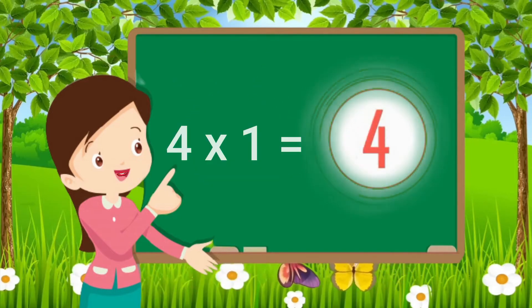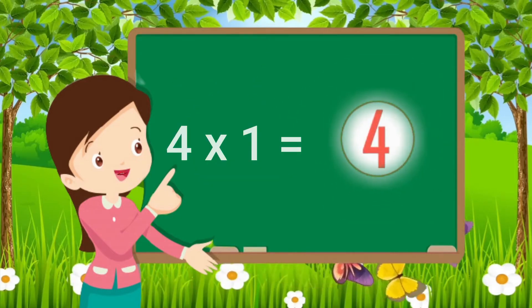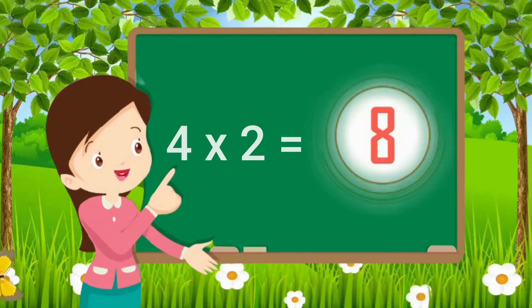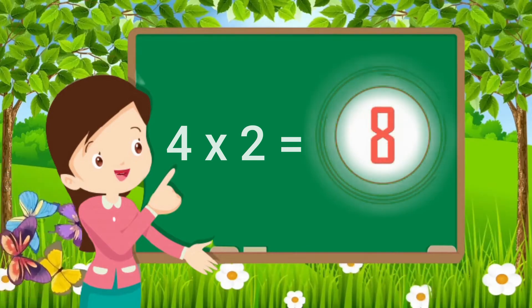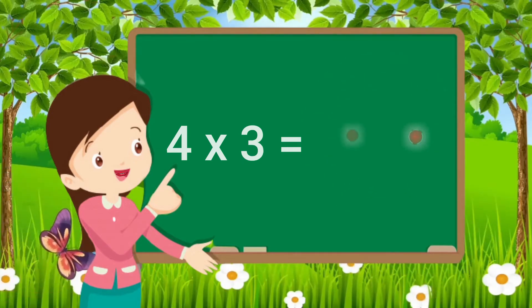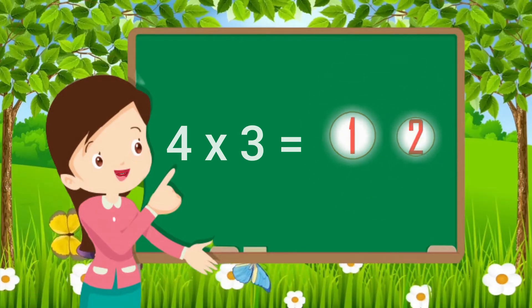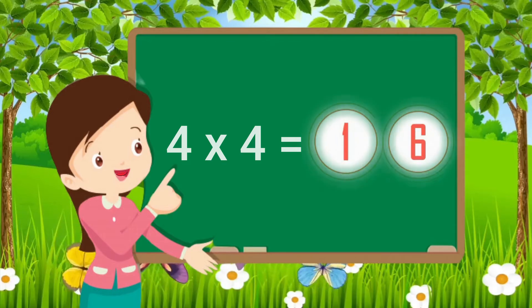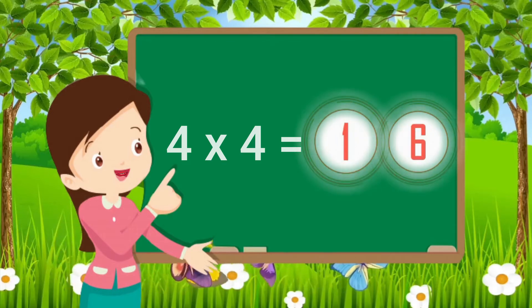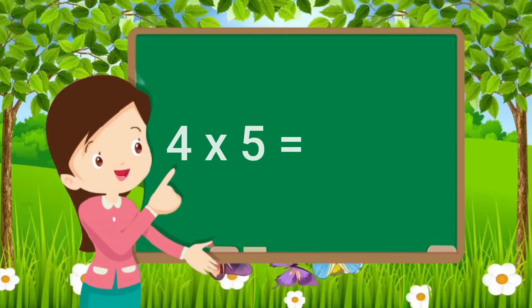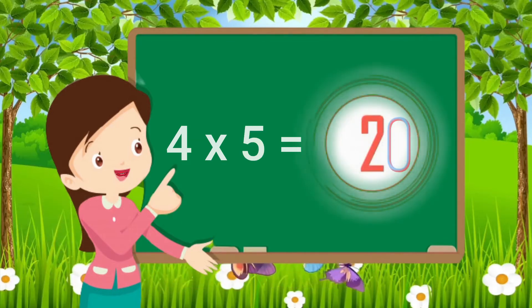Four ones are four. Four twos are eight. Four threes are twelve. Four fours are sixteen. Four fives are twenty.